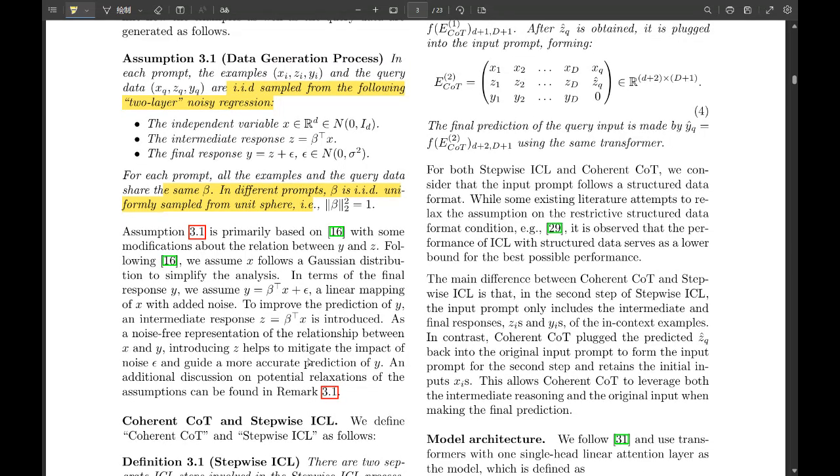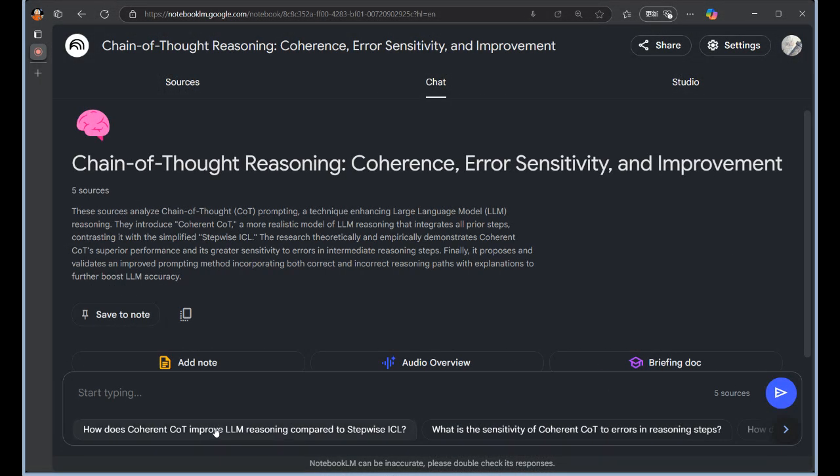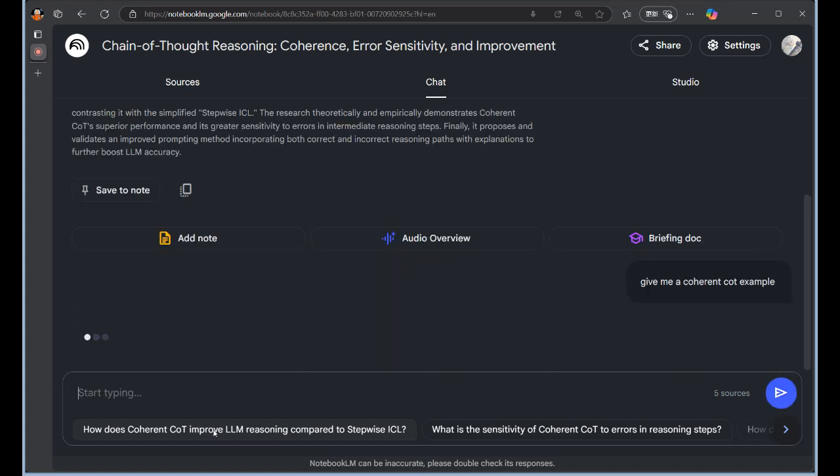And it gets even more interesting when we start poking at this Coherent CoT to see where it's most vulnerable. Oh yeah. This is where it gets really good. Lay it on me. How do you test the fragility of an LLM's thought process? Well, it's called sensitivity analysis. Sensitivity analysis. And it's like, imagine testing a bridge. You apply pressure at different points to see where it might buckle.